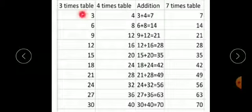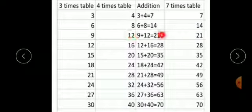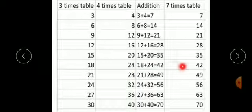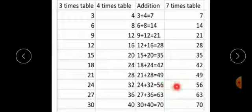3 plus 4 gives 7, so 7 ones are 7. 6 plus 8 gives 14, so 7 twos are 14. 9 plus 12 gives 21, so 7 threes are 21. 12 plus 16 gives 28, so 7 fours are 28. 15 plus 20 gives 35, so 7 fives are 35. 18 plus 24 gives 42, so 7 sixes are 42.